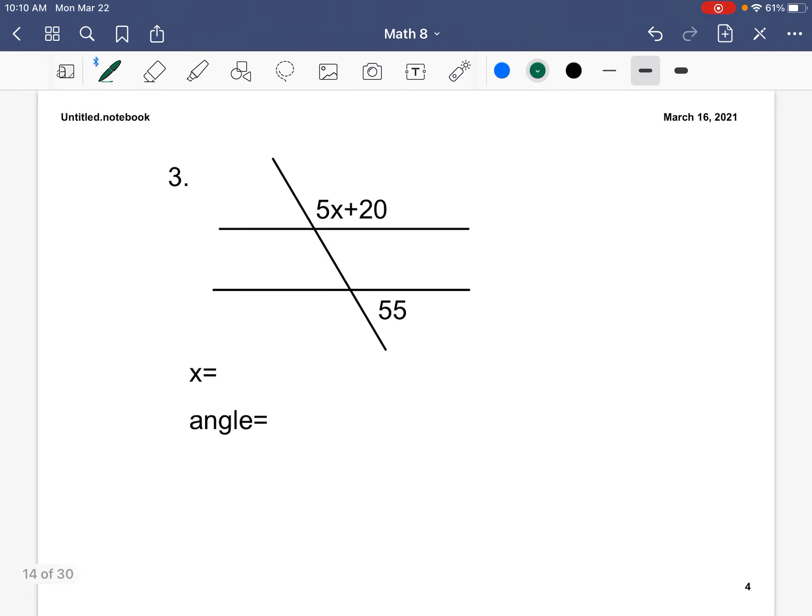Our last example we are going to go over, we have same side exterior angles, and you are going to set up your equation the exact same way. So 5x plus 20 plus 55 equals 180. We are going to combine our like terms of positive 20 and positive 55. So we'll end up with 5x plus 75 equals 180.